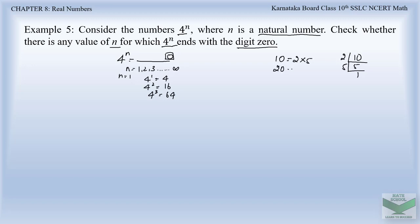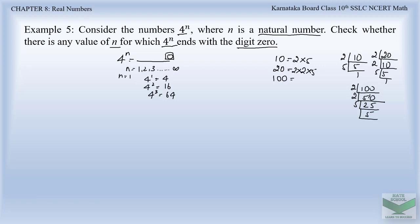Likewise, if we find the factors of 20 — again a number whose last digit is 0 — its factors are 2 into 2 into 5. If we consider 100, its factors are 2 into 2 into 5 into 5. So here, if you observe, any number which ends with the digit 0 has the factors 2 and 5 in common.